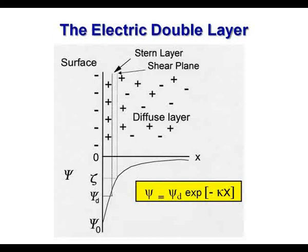The electric potential decreases linearly from ψ₀ — the actual thermodynamic surface potential — to the Stern potential, and then decays exponentially through the diffuse layer. This is described by a simple mathematical expression where x is the distance from the surface and κ (Greek kappa) is the Debye-Hückel parameter.